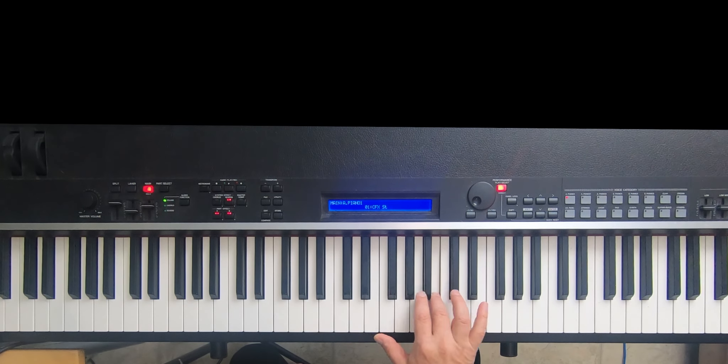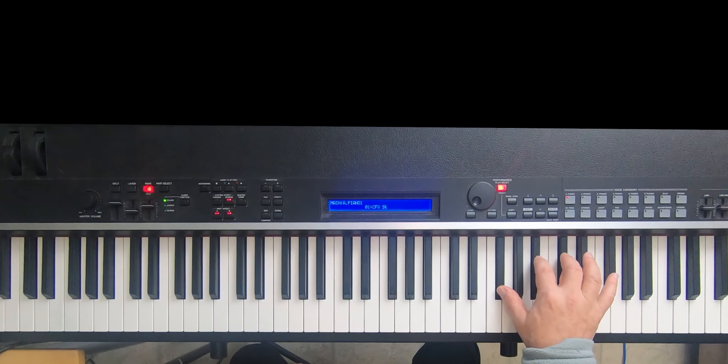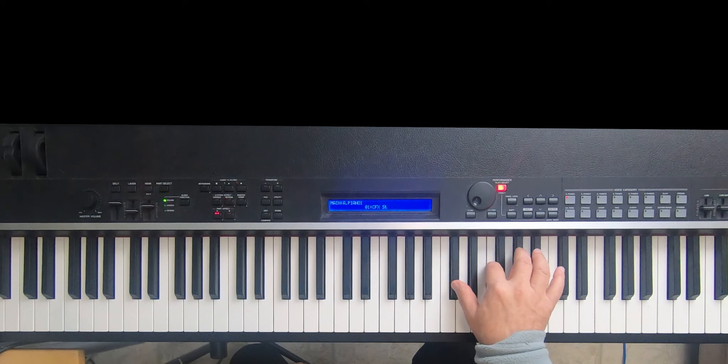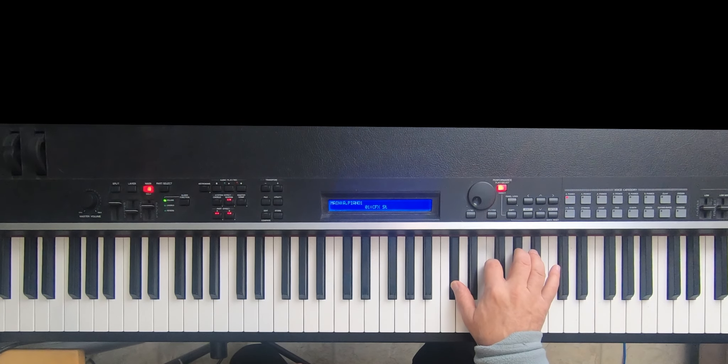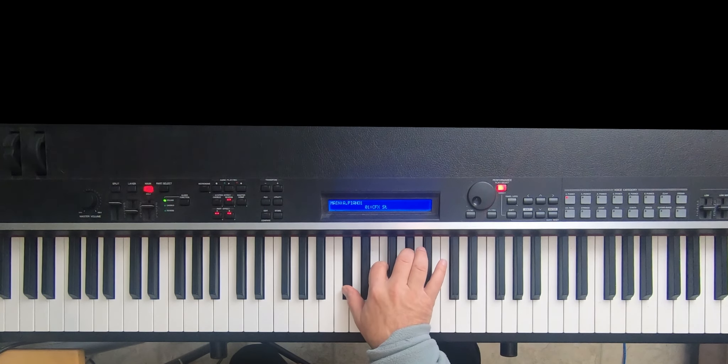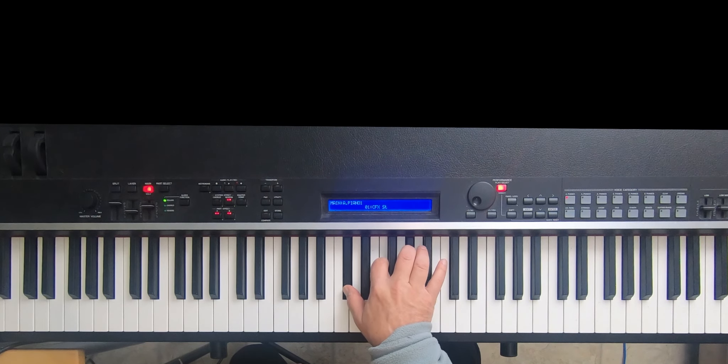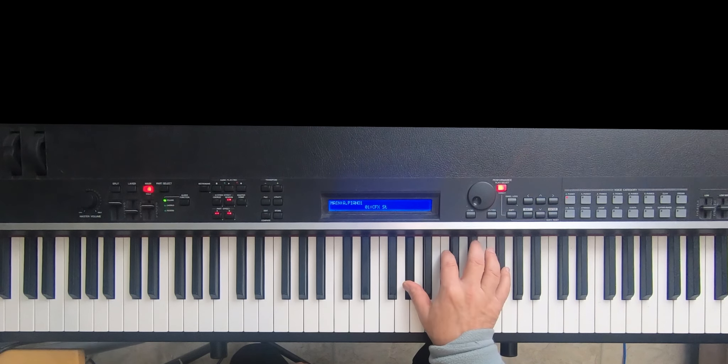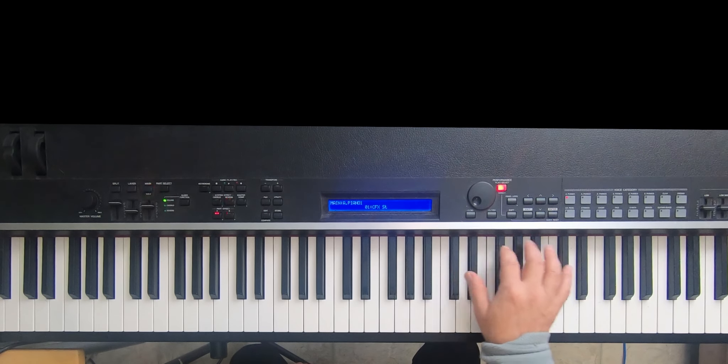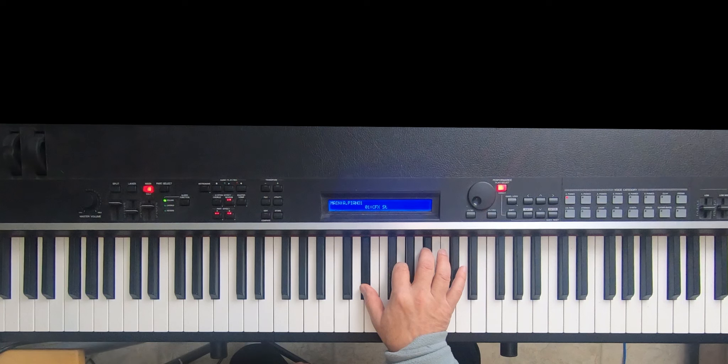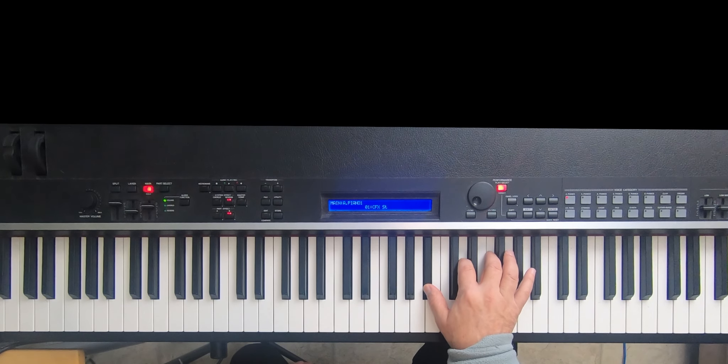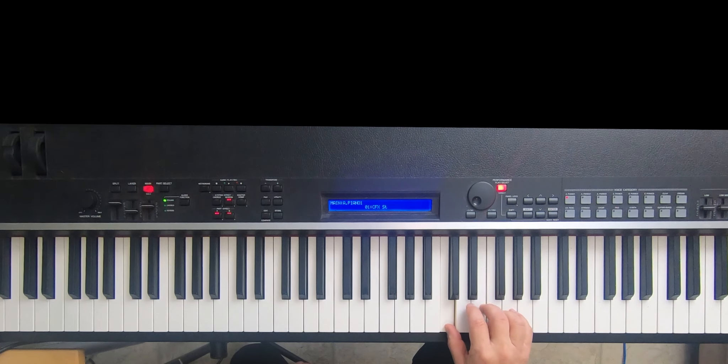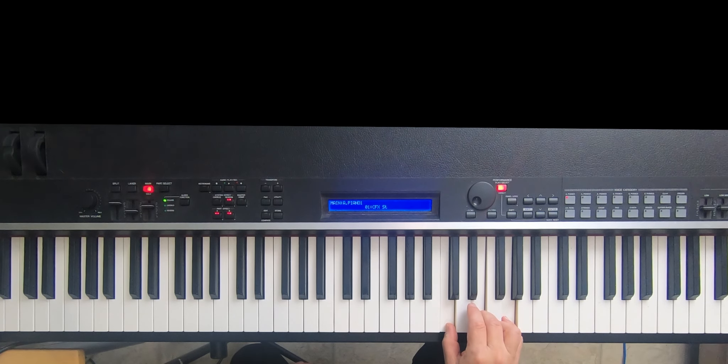And so B, F sharp, C sharp. Now you'll notice we are in the realm of flat keys as well. This could be called C sharp major, but it could also be D flat major. And then from D flat major we go to A flat, E flat, B flat, and then to F. And then now we've gone all the way around the circle, and we're back to C.